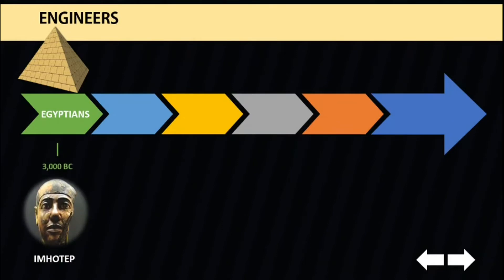One famous Egyptian builder is Imhotep, considered the first structural engineer in history. He is one of only two commoners to be worshipped as a deity. He built the Step Pyramid of Saqqara around 3000 BC, which yielded great influence in ancient Egypt.